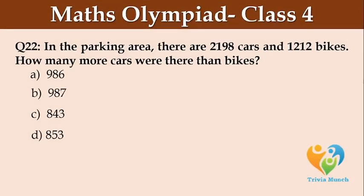In the parking area, there are 2,198 cars and 1,212 bikes. How many more cars were there than bikes?